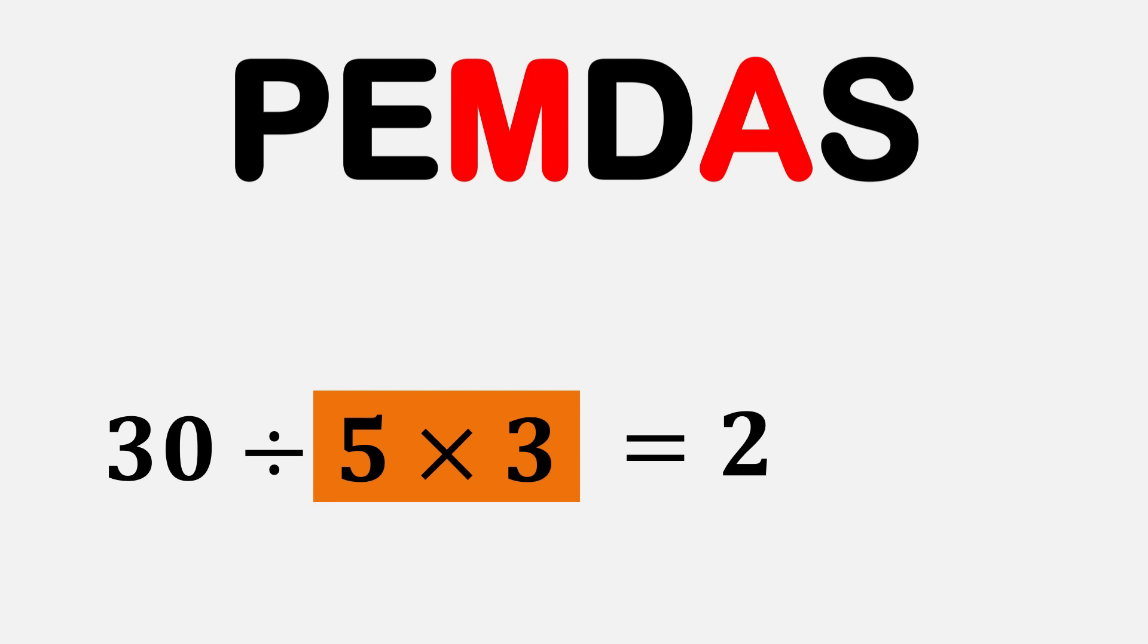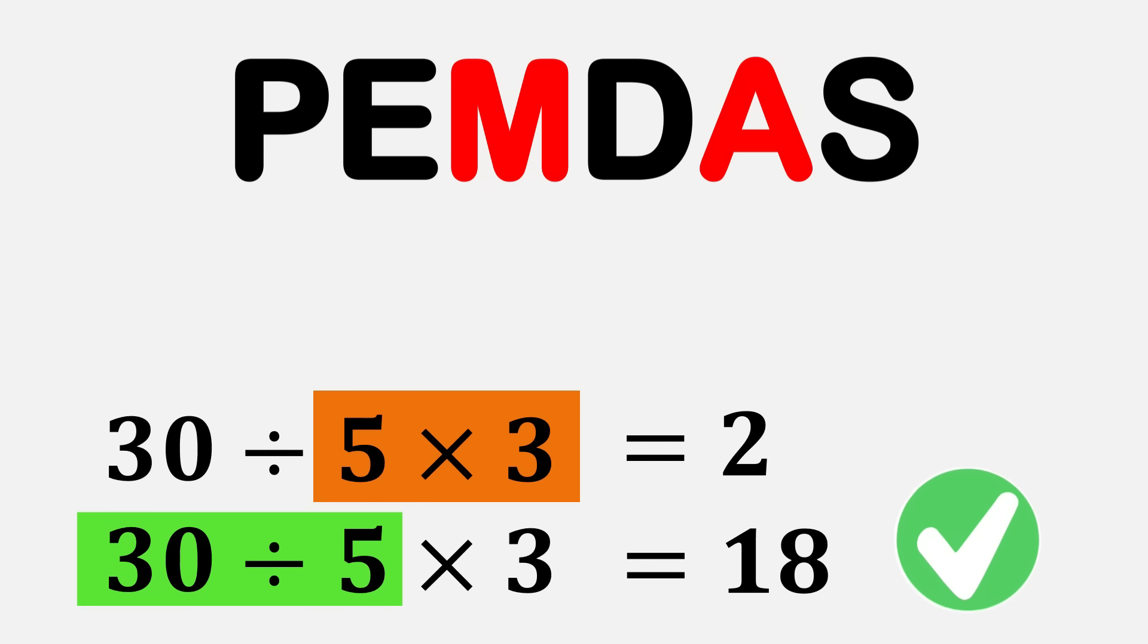If we multiply 5 times 3 first, we get 15, and then 30 divided by 15 equals 2. But that's not correct. According to the order of operations, we go from left to right, so first 30 divided by 5 gives 6, and then 6 times 3 equals 18. That's the correct answer.